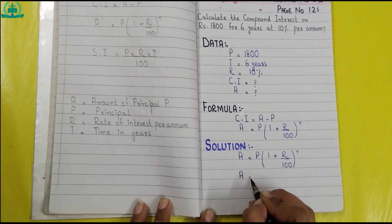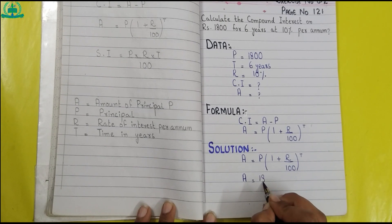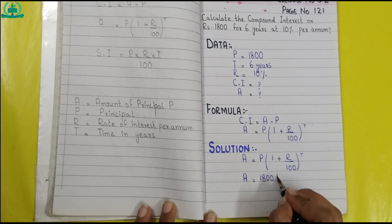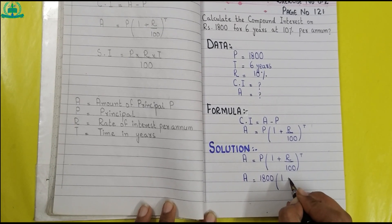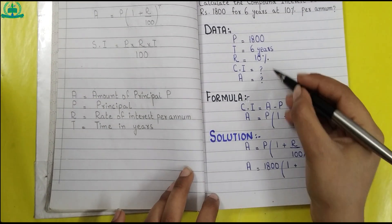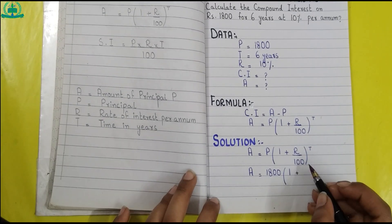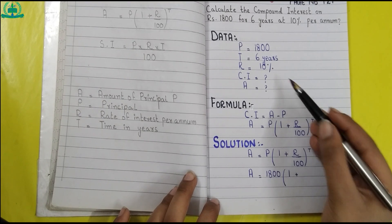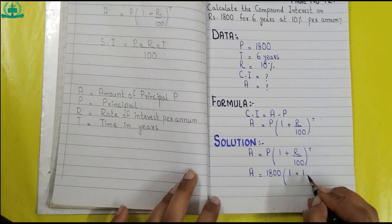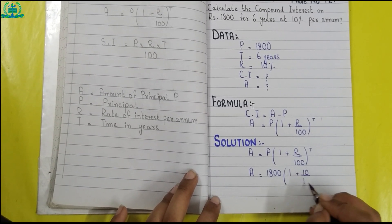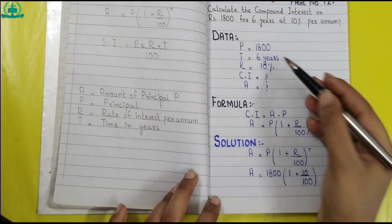Give heading 'Solution'. Rewrite the formula of amount. Amount equals 1800 multiplied by (1 plus 10 upon 100) raised to power 6. One is constant so we write one as it is. When we change percent into simplest form we divide by 100, but 100 is already given in the formula, so we write 10 upon 100. Time is six years so we write 6.